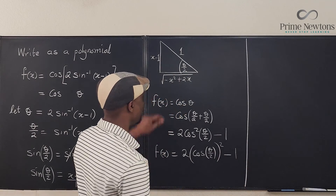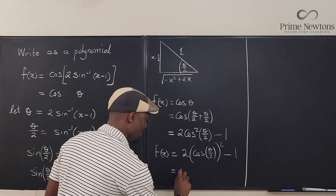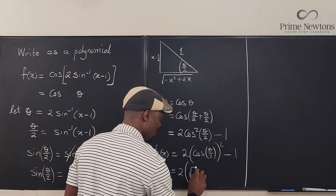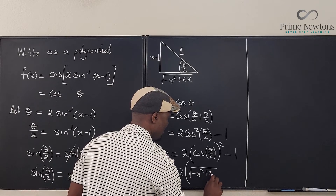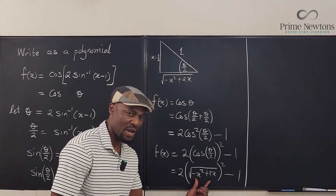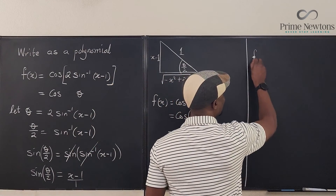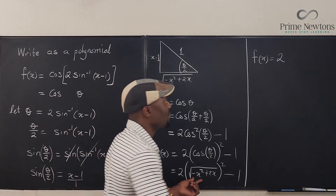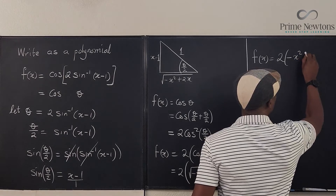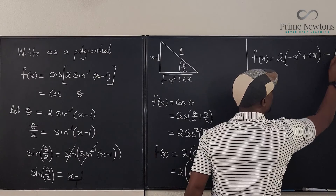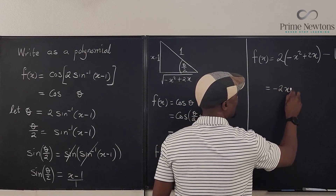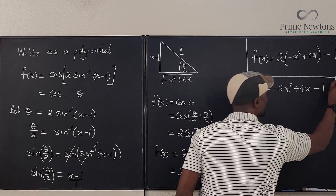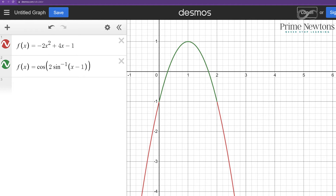So F of X is equal to 2 times (the square root of negative X squared plus 2X) squared, minus 1. When we square the square root, the square root sign disappears, giving 2 times (negative X squared plus 2X), minus 1. Therefore, F of X is equal to negative 2X squared plus 4X minus 1. This polynomial is our final answer.